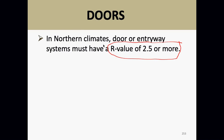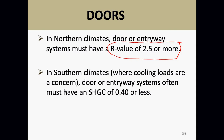Nine out of ten times this isn't a problem, because most people have a solid core door with foam insulation inside these days. In southern climates, we use a solar heat gain number of 0.4 or less where cooling loads are concerned.